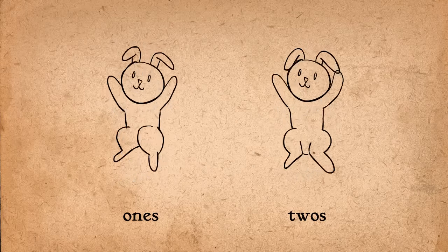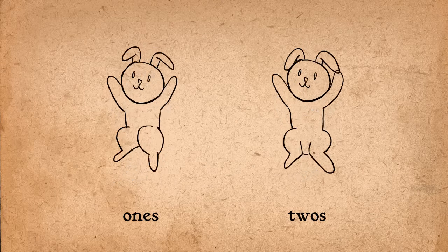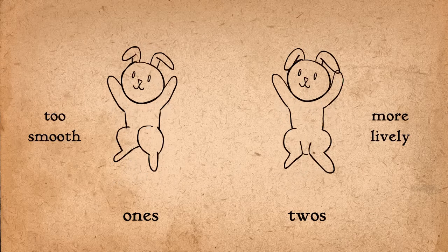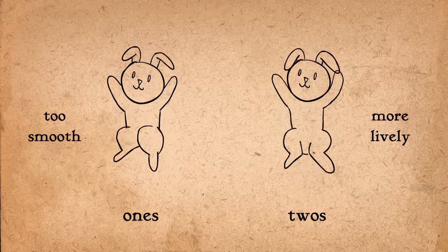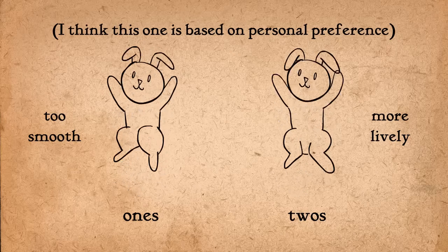Some would also say that drawing on twos is better for fast actions as well, because it gives a sparkle and spirit to the animation that would otherwise be too evenly timed and less lively if it were drawn on ones.